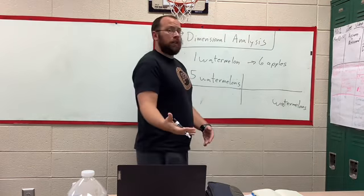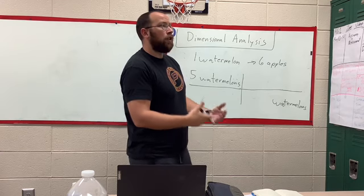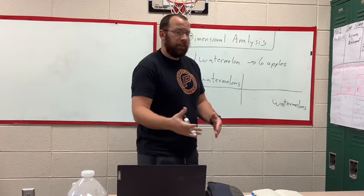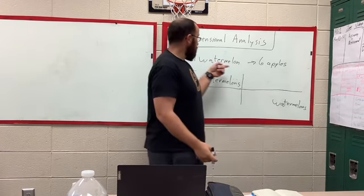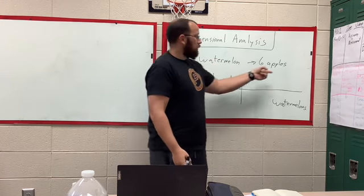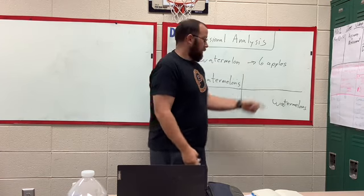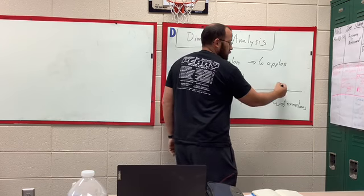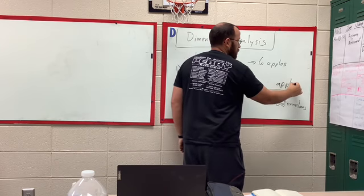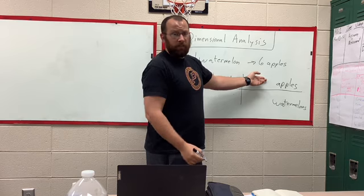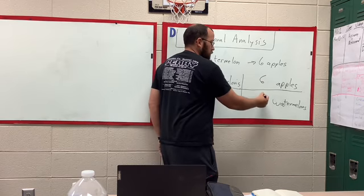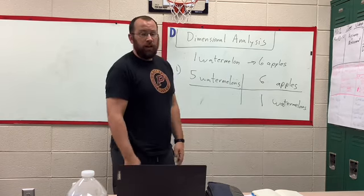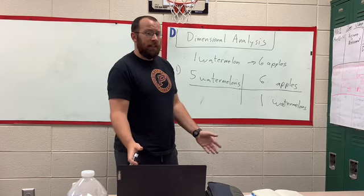Now, this is where you have to convert it. Do you have a direct conversion from one thing to another? In this case, you do. You know that for every one watermelon, you have six apples. So, watermelons to apples. And now, how many watermelons per apples? Six apples, one watermelon. And then, this is the easy part.